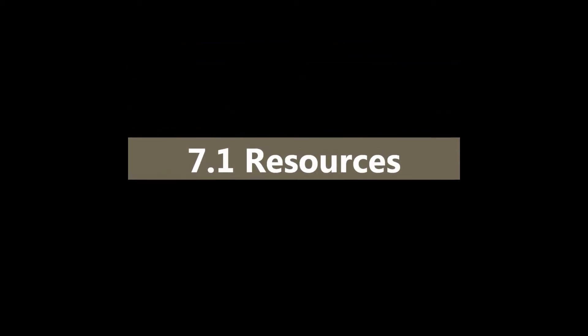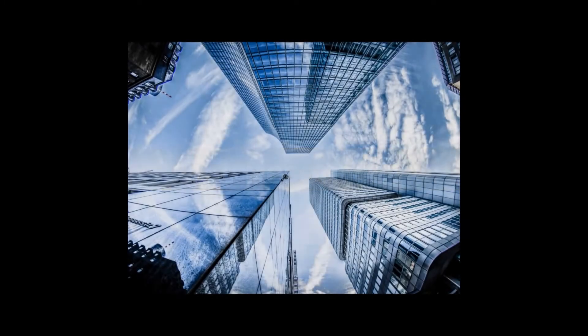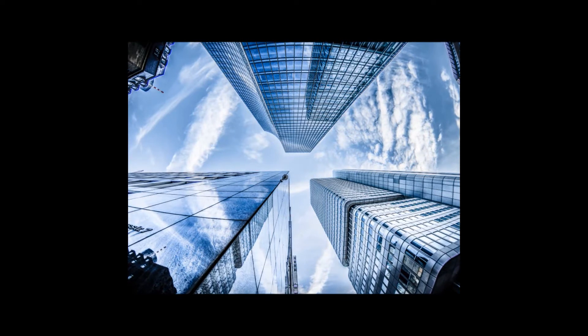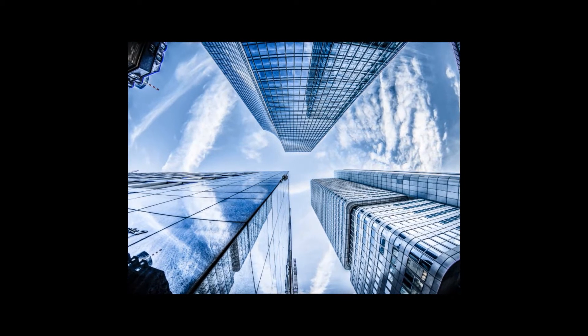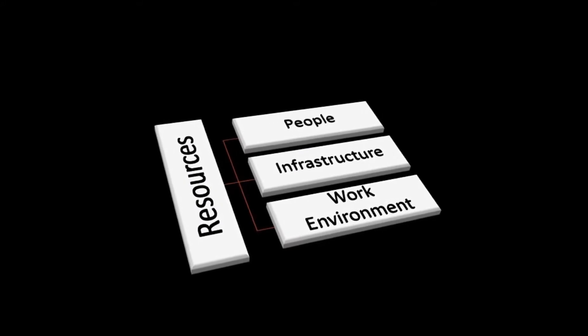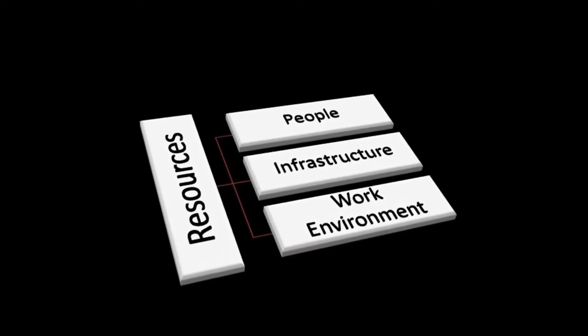This section looks at the resources, competence, awareness, communication and documentation of an FSMS. Let's start with section 7.1, Resources. The organization should consider the capacity of, and any constraints on, existing internal resources and the need for external resources. Resources include people, infrastructure and work environment.